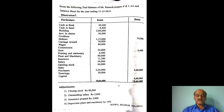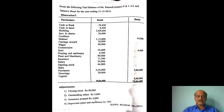Adjustments: Closing stock Rs. 80,000. Outstanding salary Rs. 2,800. Insurance prepaid Rs. 2,000. Depreciate plant and machinery by 10%.